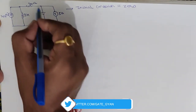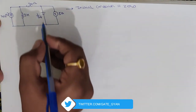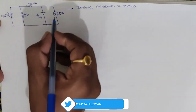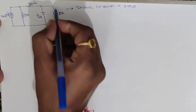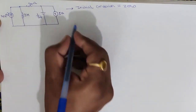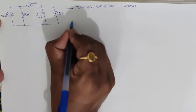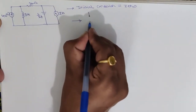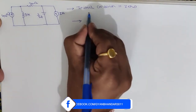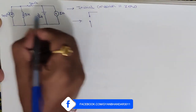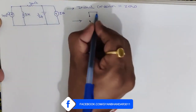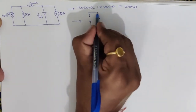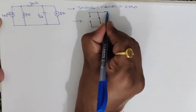I will use the superposition theorem to find VC. We have to find VC maximum. So first I will apply the superposition theorem and consider the DC current source only. I will redraw the circuit with the AC current source open.